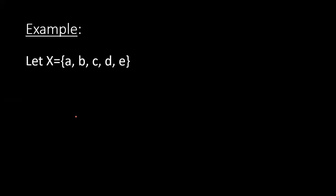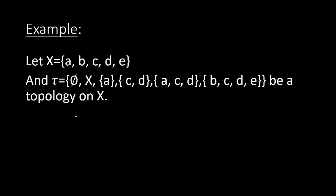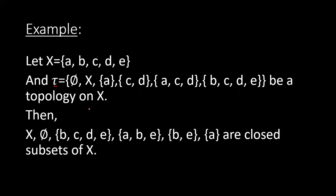For the closed set example, we take the same X = {a, b, c, d, e} and τ = {φ, X, {a}, {c,d}, {a,c,d}, {b,c,d,e}}. The closed subsets are the complements: complement of φ is X, complement of X is φ, complement of {a} is {b,c,d,e}, complement of {c,d} is {a,b,e}, complement of {a,c,d} is {b,e}, and complement of {b,c,d,e} is {a}.